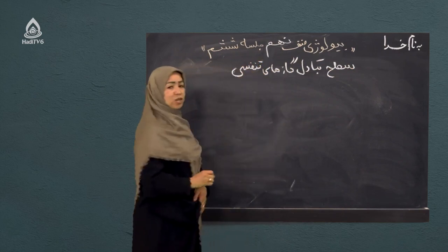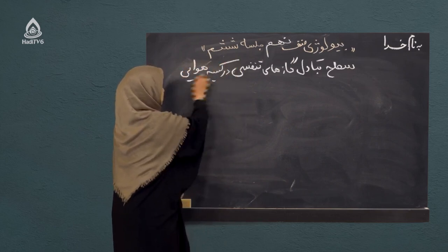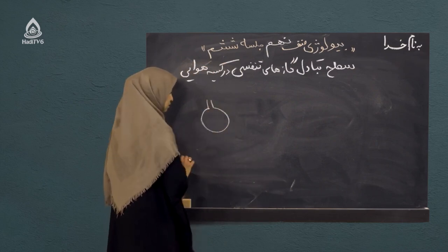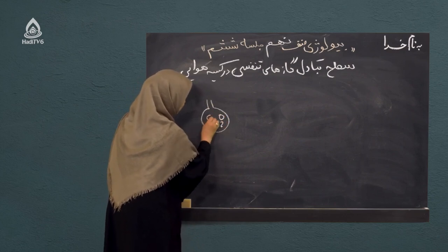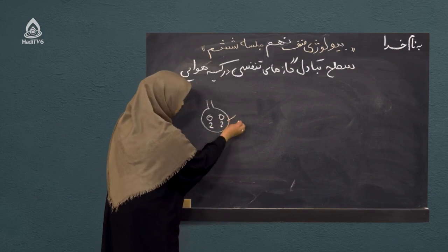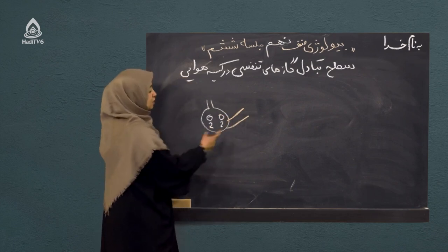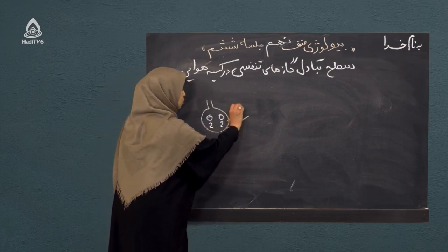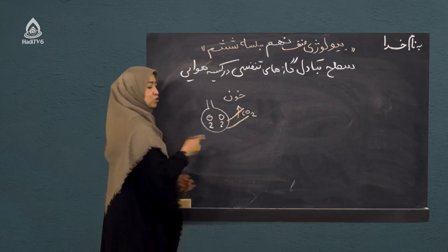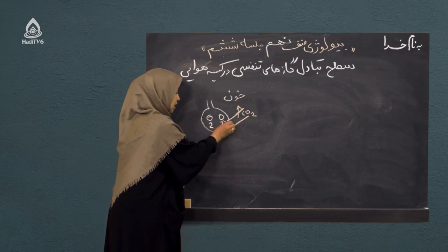سطح تبادل گازهای تنفسی در کیسه‌های هوایی است. این یک کیسه هوایی است که در داخل آن پر از اکسیژن است. یک مویرگ خونی هم دور آن پیچیده. در داخل خون کربن دی‌اکسید وجود دارد که میخواهد خارج شود، ولی اکسیژن باید وارد شود.